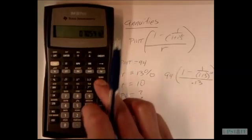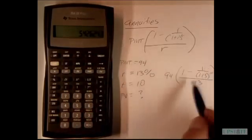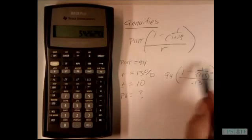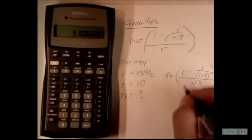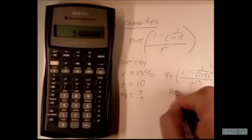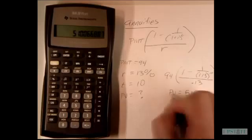We're then going to divide that by 0.13. This whole section here is 5.43, and then we're going to multiply that by 94. That's going to tell us that we have a present value of these payments of 510.07.